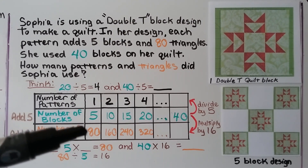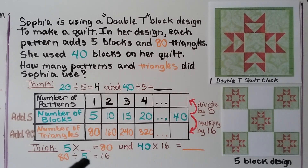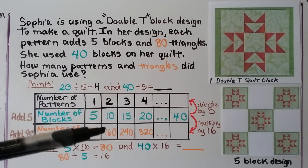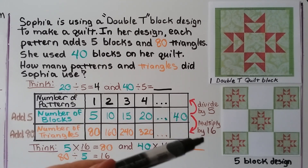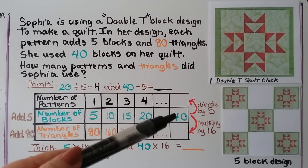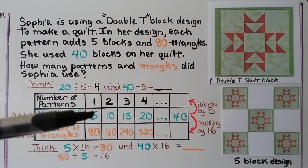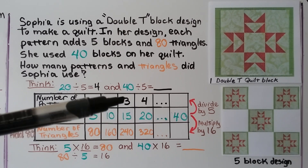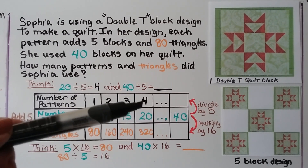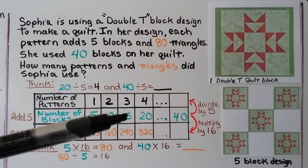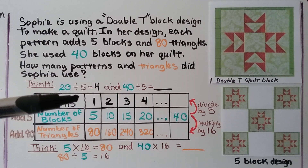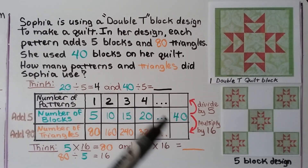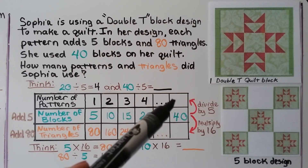We have 5 times some number equals 80. We can do 80 divided by 5, which equals 16. So it must be 5 times 16 equals 80. We check: 10 times 16 is 160 — it is times 16. So to go from the number of blocks to the number of triangles, we multiply by 16. For the number of patterns, 5 goes to 1, 10 goes to 2, 15 goes to 3, 20 goes to 4. So 20 divided by 5 equals 4. The rule is divide by 5. We find the number of patterns by doing 40 divided by 5, which gives us 8.